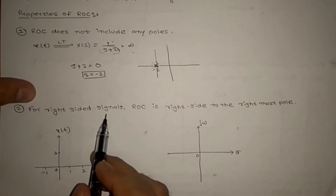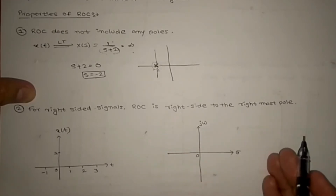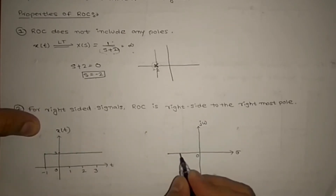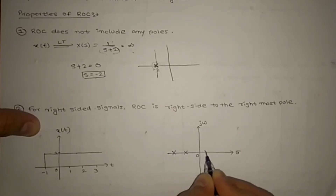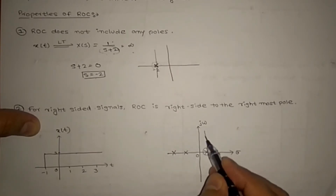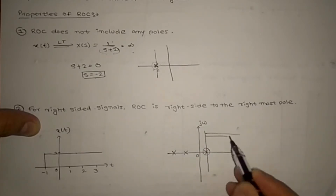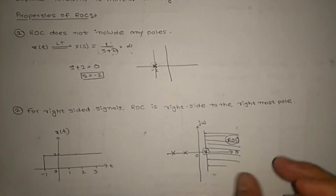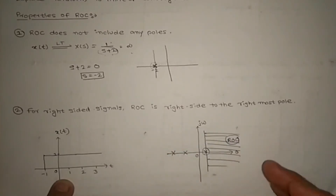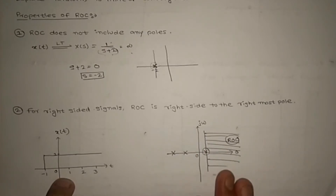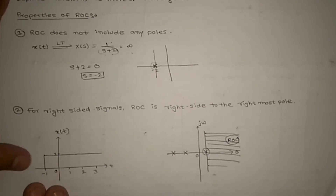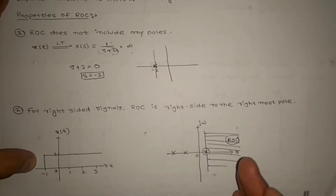The second property: for a right-sided signal, the ROC is to the right of the rightmost pole. Suppose you have a right-sided signal with multiple poles. The rightmost pole is identified, and the ROC extends from that rightmost pole to the right side completely. Just like a signal belonging to the right side wants a right-sided ROC — the ROC matches the nature of the signal.